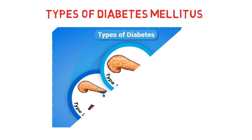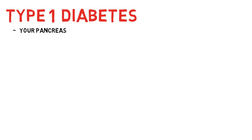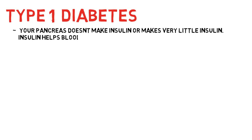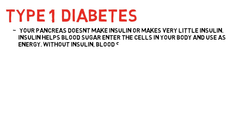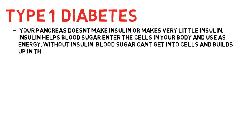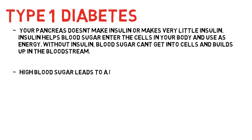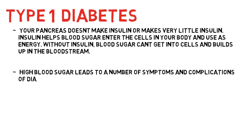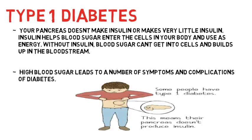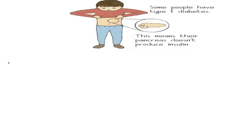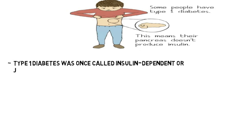Let's discuss the types of diabetes mellitus. Type 1 diabetes is when your pancreas cannot make insulin. Insulin helps blood sugar enter the cells in your body and be used as energy. Without insulin, blood sugar cannot get into the body cells and builds up in the bloodstream. This high blood sugar leads to a number of symptoms and complications. Type 1 diabetes was once called insulin-dependent diabetes mellitus or juvenile diabetes.